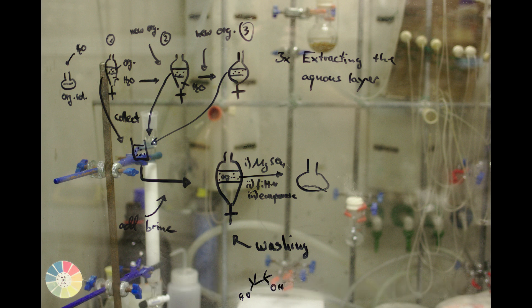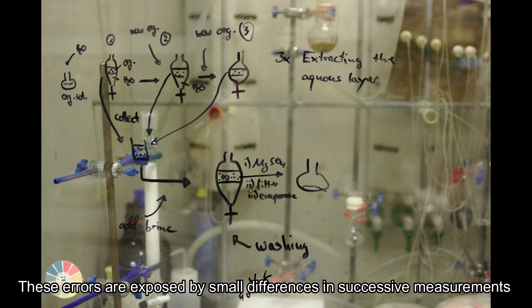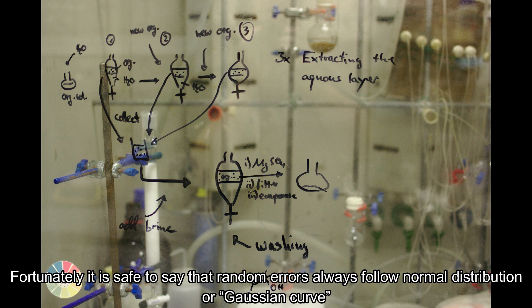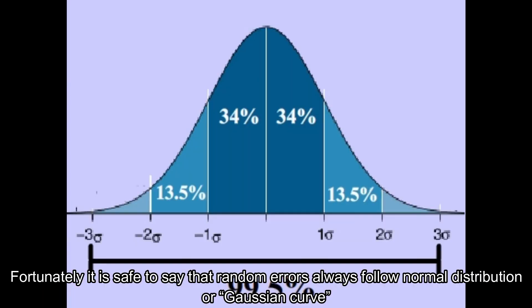Sometimes called indeterminate errors, these errors are exposed by small differences in successive measurements made under similar conditions and cannot be predicted or estimated. Fortunately, it is safe to say that random errors always follow normal distribution or Gaussian curve.